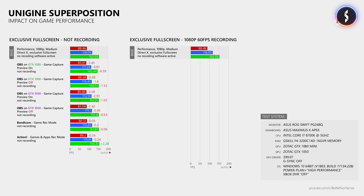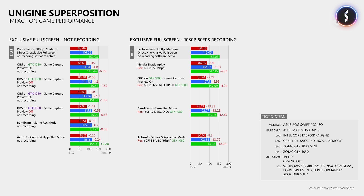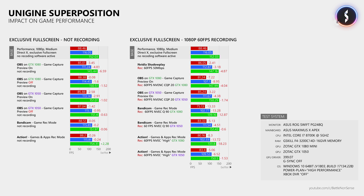Now let's talk about performance while recording gameplay. The current version of Shadowplay still reduces the average frame rate by about 3 frames. When OBS uses the primary graphics card for encoding, I lose about 9 FPS on average. With Bandicam and Action the frame rate dropped by about 13 frames on average. Once I offload the encoding to the GTX 1050, OBS, Bandicam and Action achieve about the same FPS as Nvidia's Shadowplay while providing better image quality.